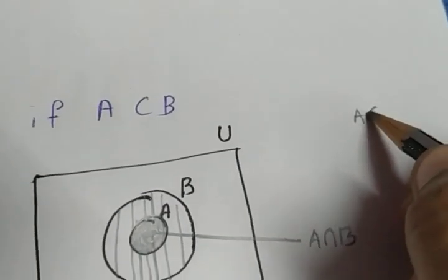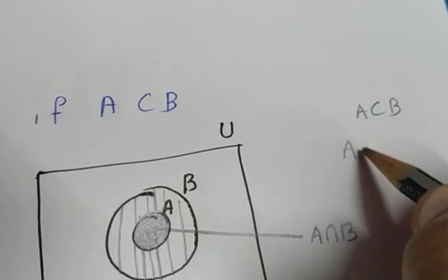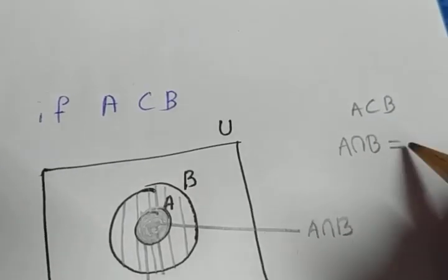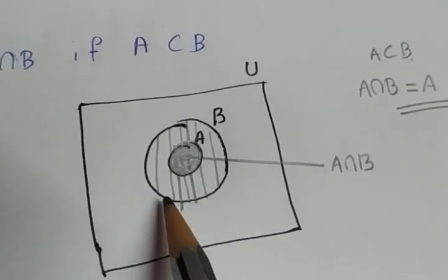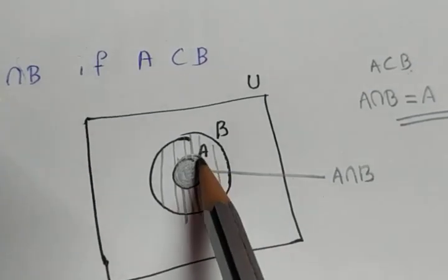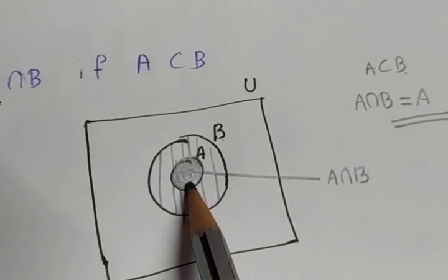Otherwise also we know that if A subset of B, A intersection B will be the smaller of the sets A and B, and the smaller of the sets is A. So A intersection B is A. From the Venn diagram also it is clear that if A is a subset of B then A intersection B is A.